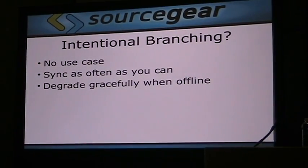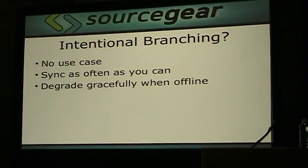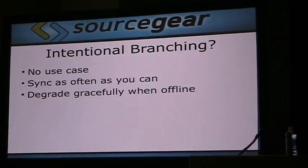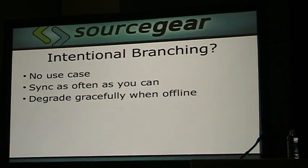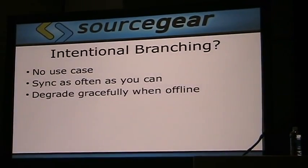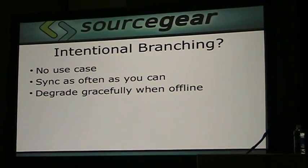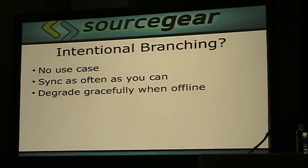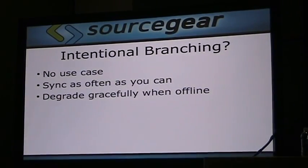One of the first things I'd like to point out about the decentralized database is that we have encountered no use case for intentionally branching a database. When we first set out to create this, we weren't really sure where it was going to go. There was some talk about branching a database, but what it turned out to be is that everything we use a database for wants to be synced and merged as often as possible. So don't hear me say that the killer feature of a decentralized database is that you can start branching your comments. You don't want to do that. If somebody comes along with something where they really do want to branch database-oriented data, then we'll rethink this, but so far we haven't found one.